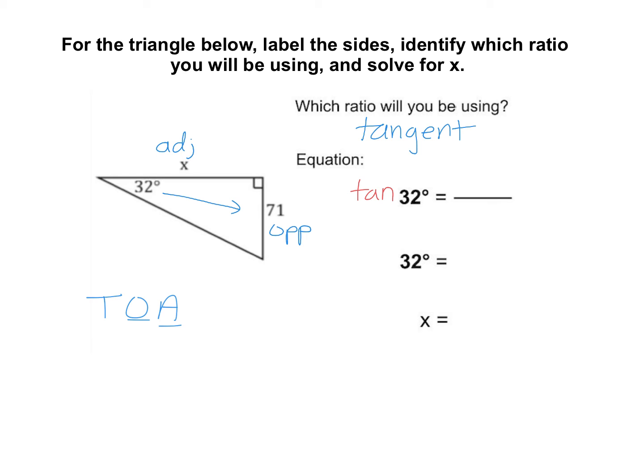So type tangent there, 32 degrees, equals opposite, 71, over adjacent, which is x.